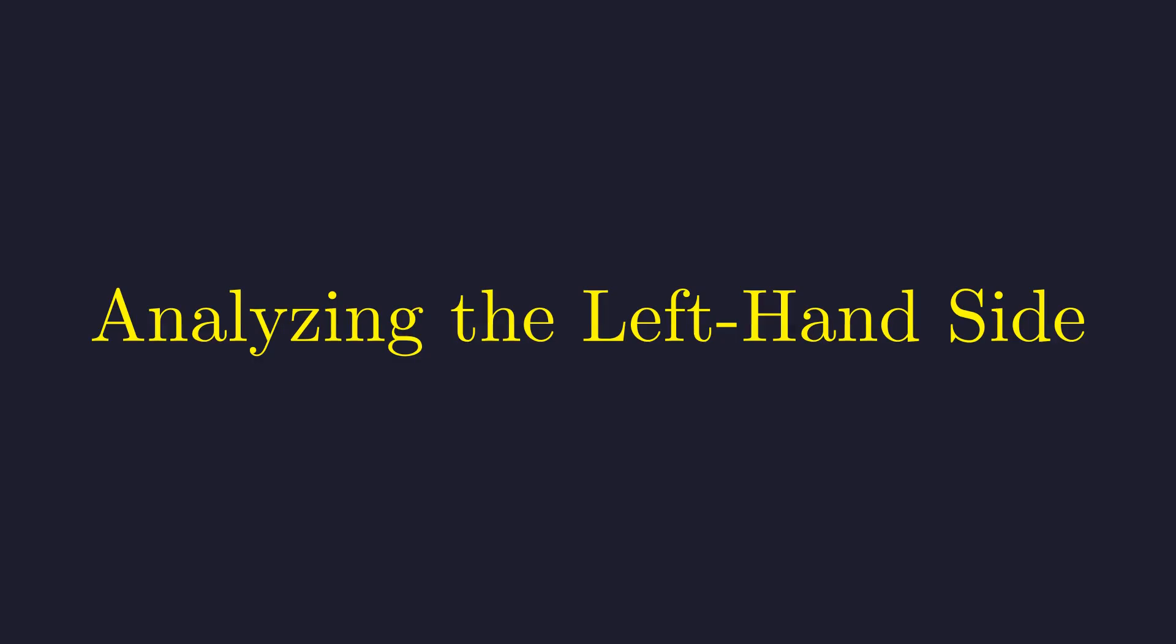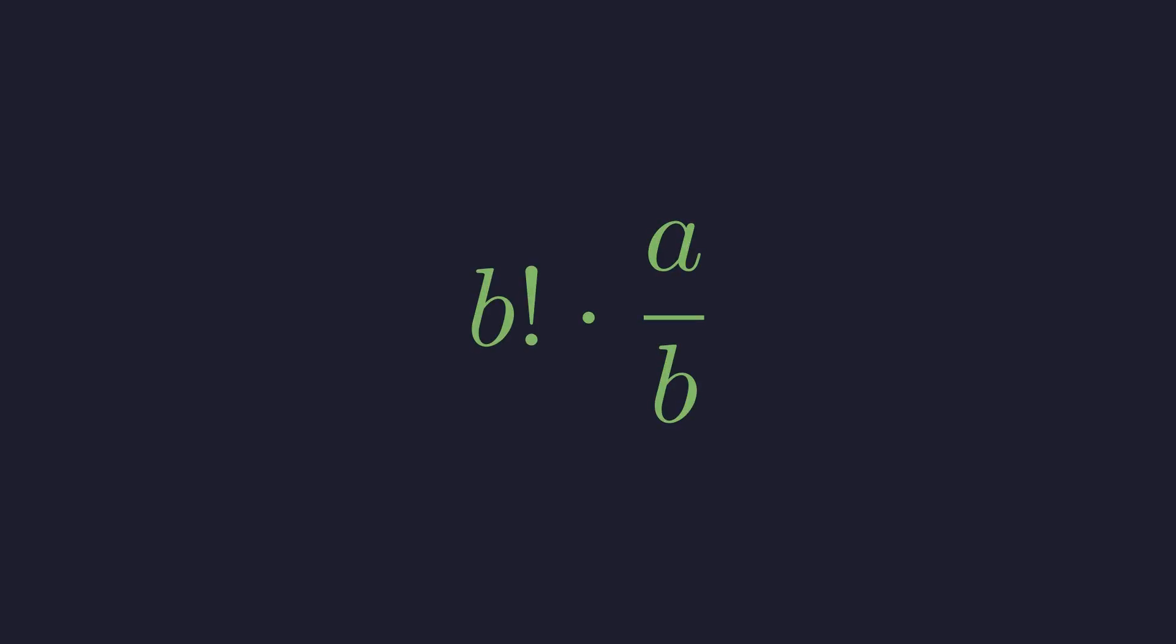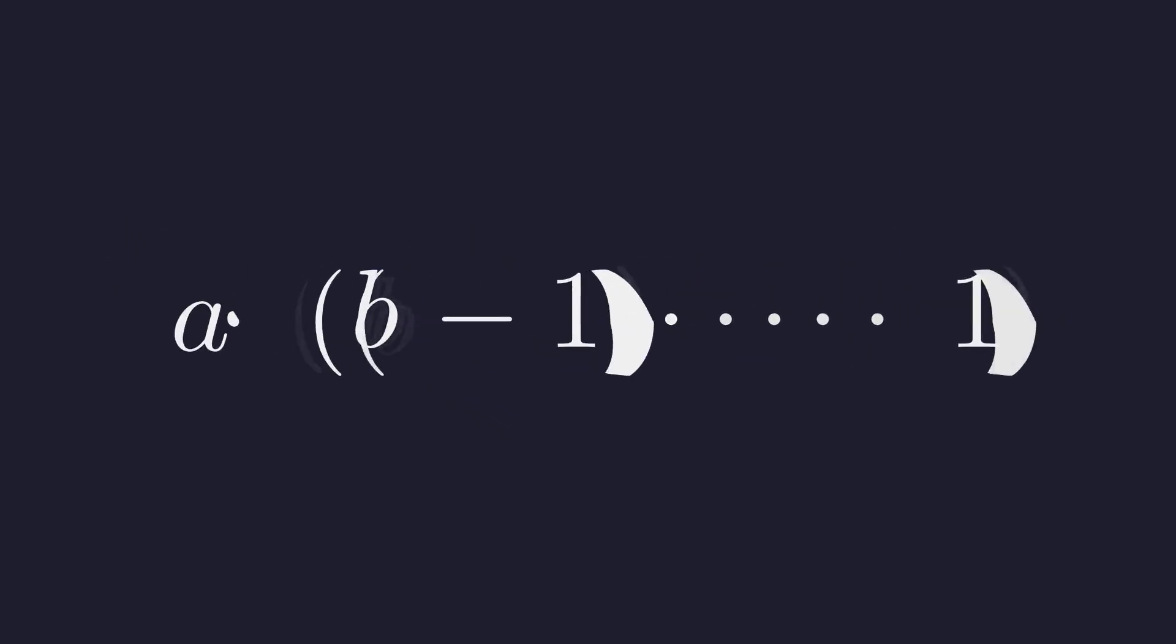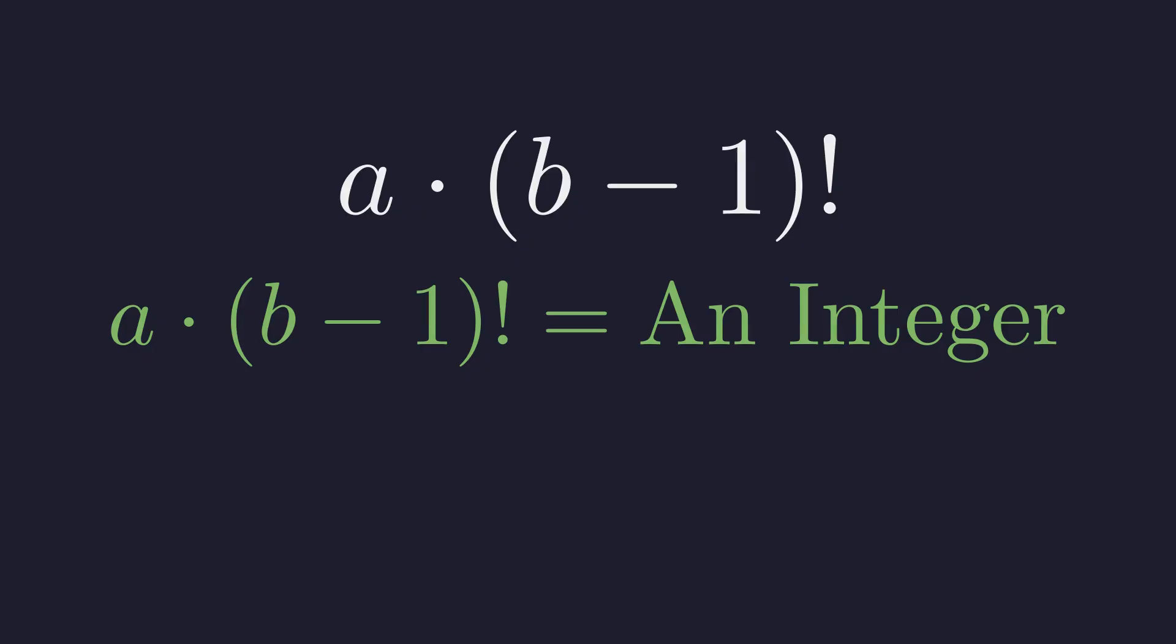Let's first focus on the left-hand side of this equation. It simplifies cleanly. We have B factorial times the quantity A divided by B. By definition, B factorial is the product of all integers from 1 up to B, so we can rewrite B factorial as B times B minus 1 and so on, down to 1. The B in the numerator and the B in the denominator cancel each other out. This leaves us with A multiplied by the product of integers from 1 up to B minus 1. This product is, by definition, B minus 1 factorial, so the left-hand side simplifies to A times B minus 1 factorial. Since A and B are integers, this entire expression must be an integer. Let's call this integer N.